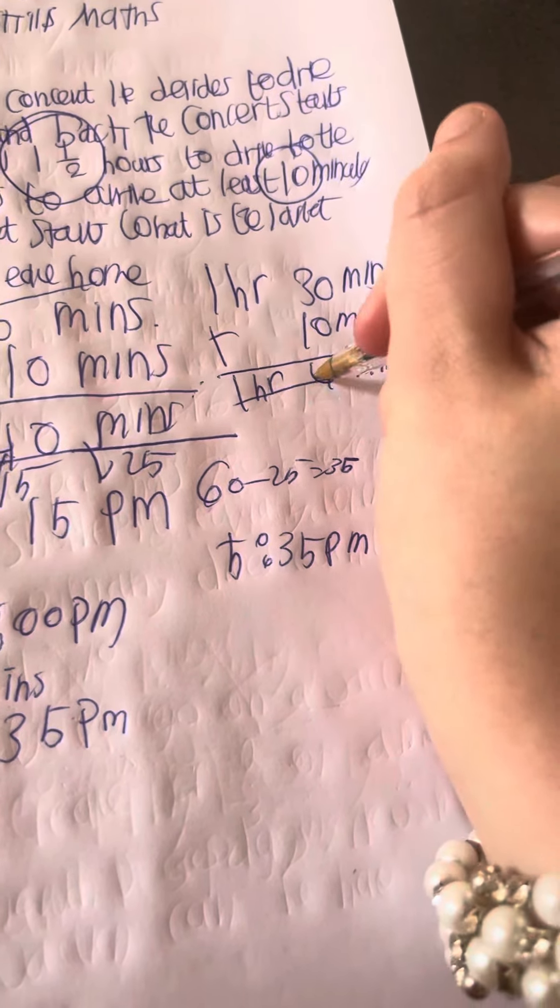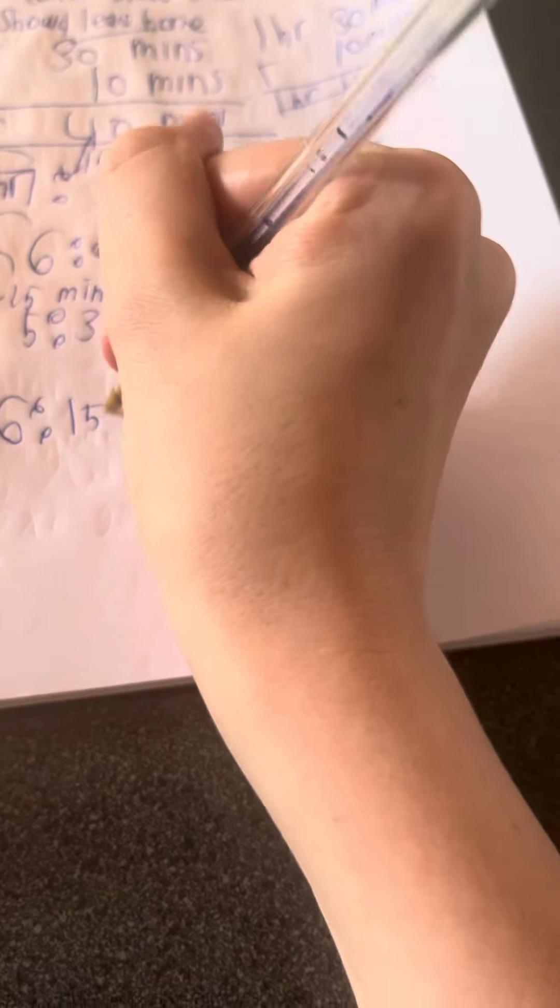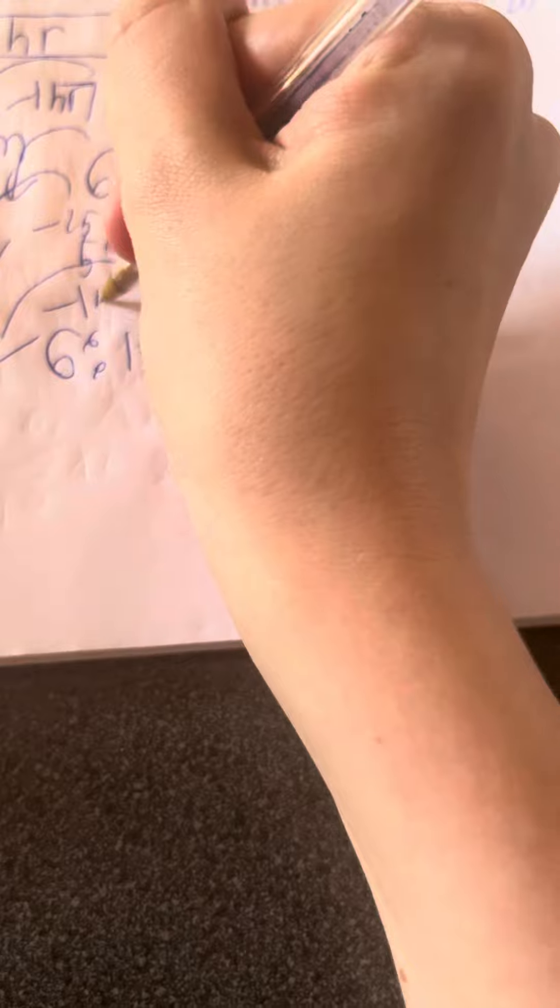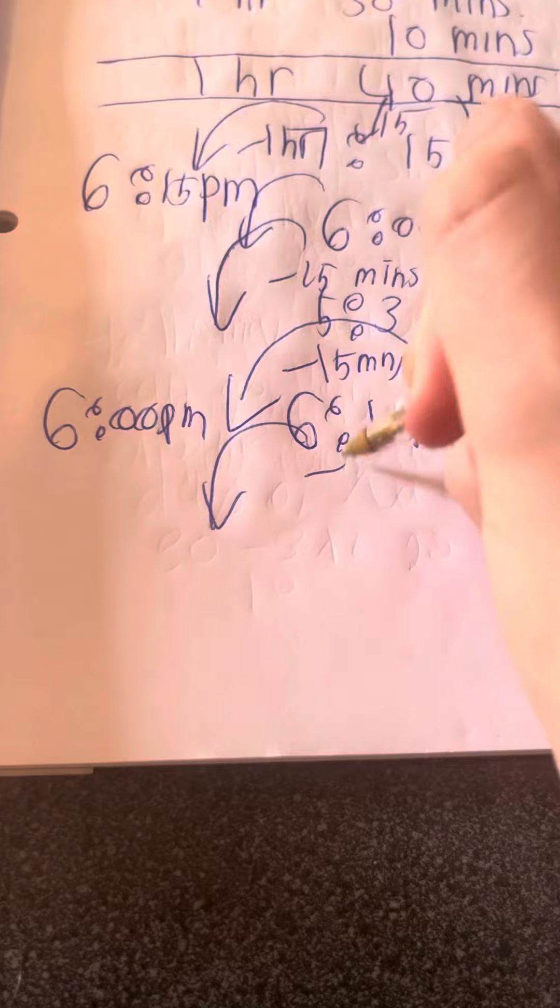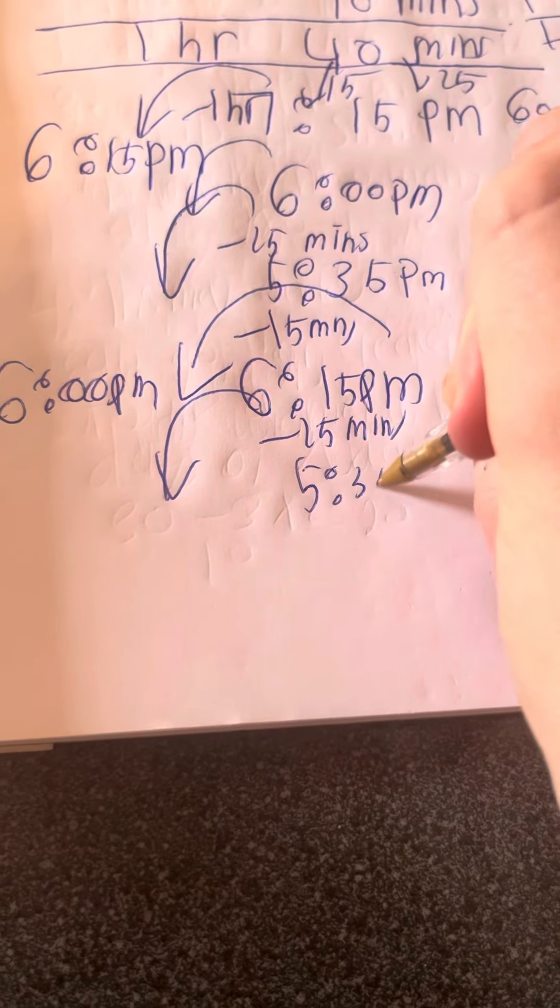If we break forty minutes down to fifteen and twenty-five, we can work backwards. Starting from 7:15pm, going back one hour gives us 6:15pm. If we go back fifteen minutes, that's 6:00pm. And if we go back another twenty-five minutes, that would be 5:35pm.